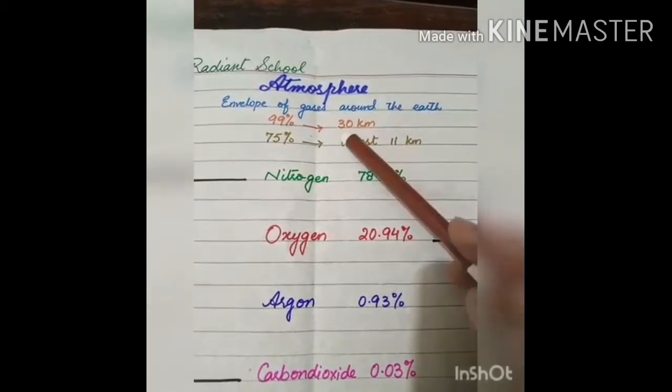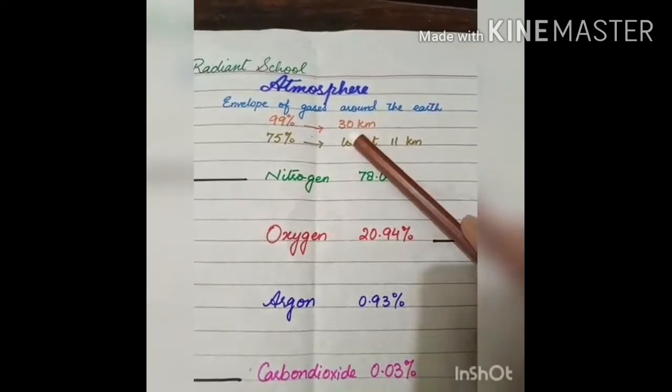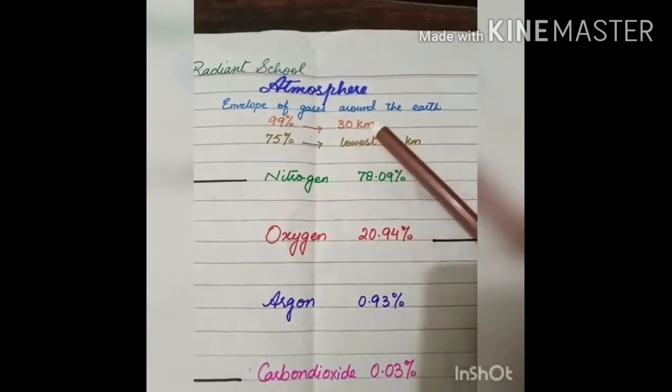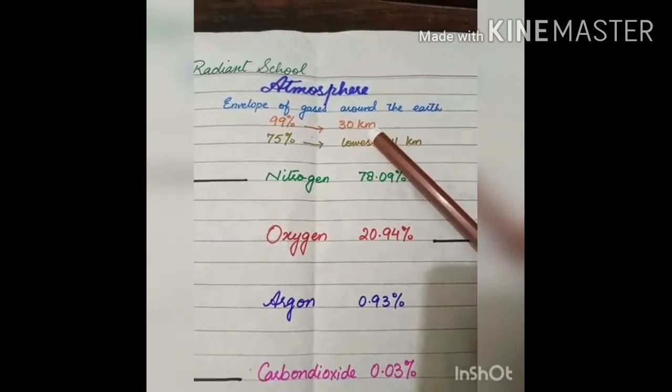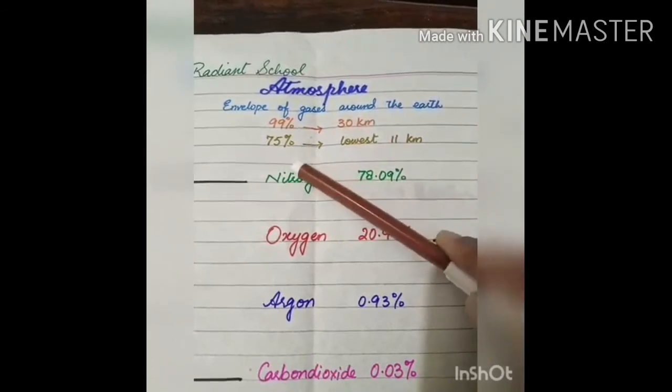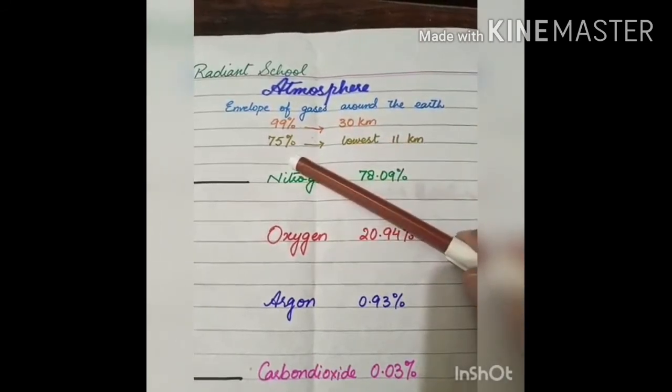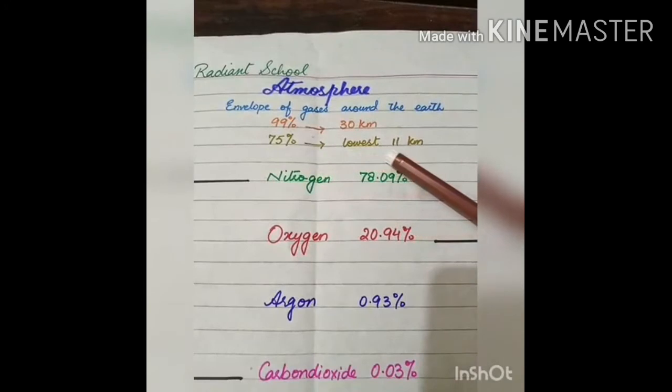About 99% of the atmospheric mass or atmospheric gases lies within the first 30 km from the surface of the earth, out of which 75% of the atmospheric gases lies in the lowest 11 km.